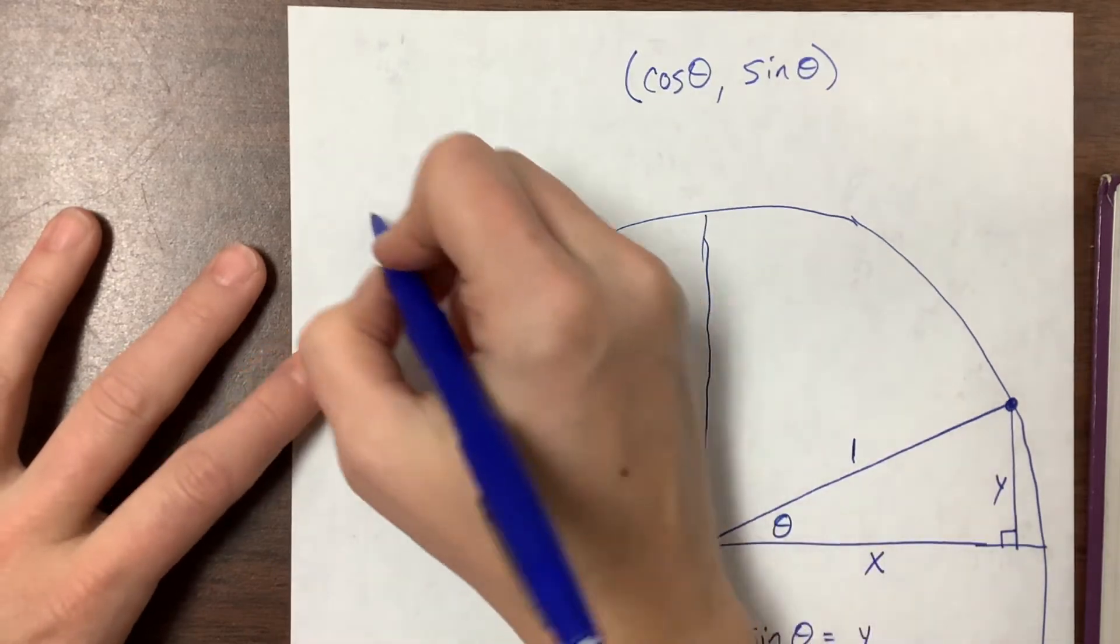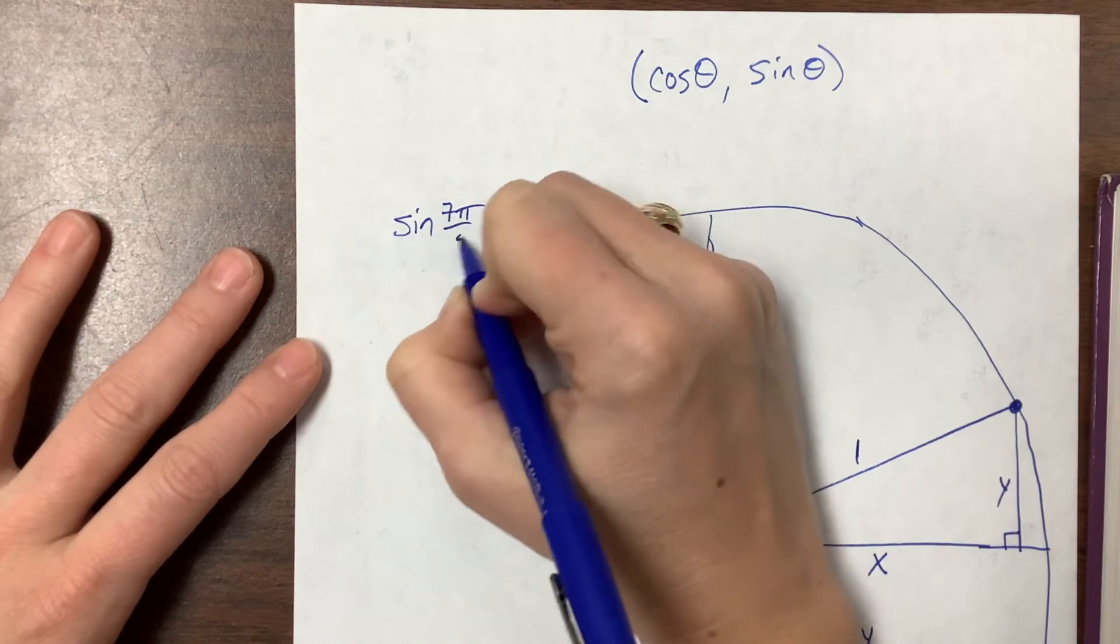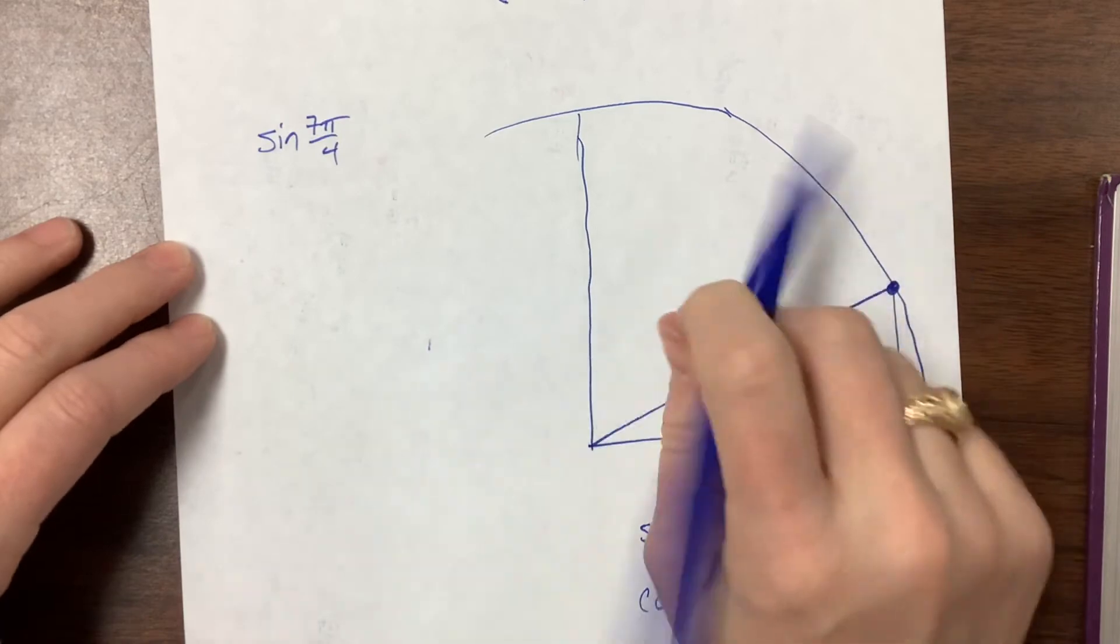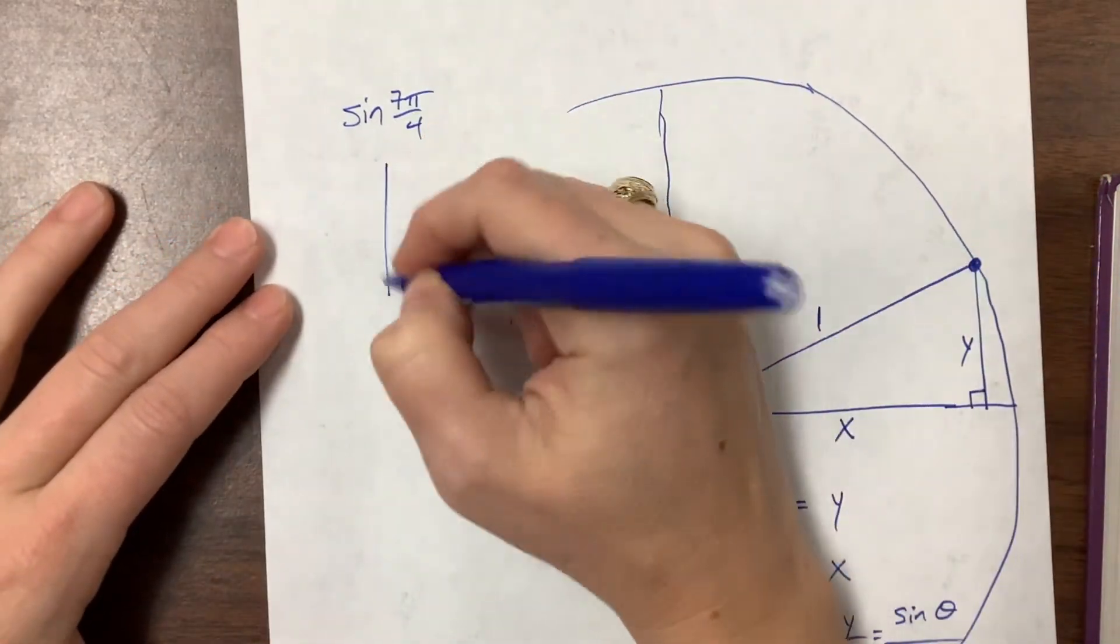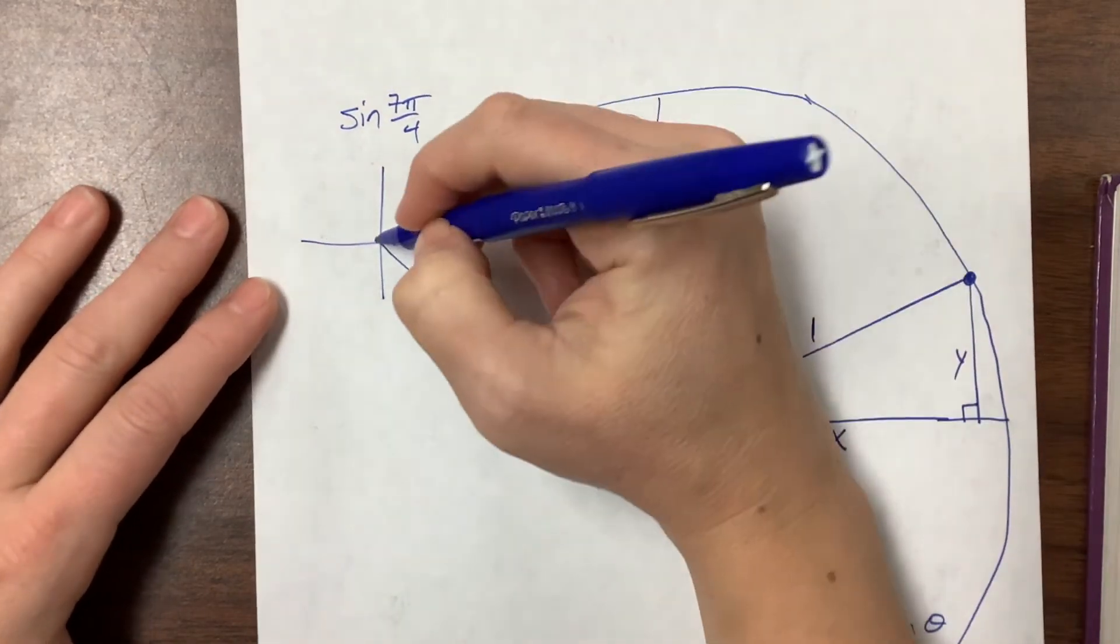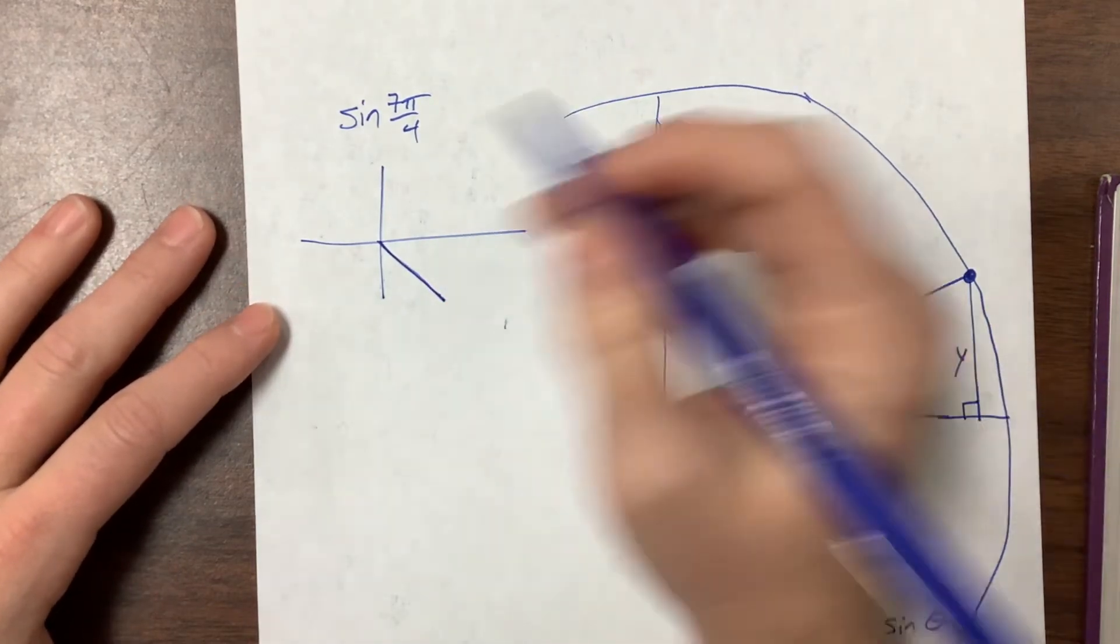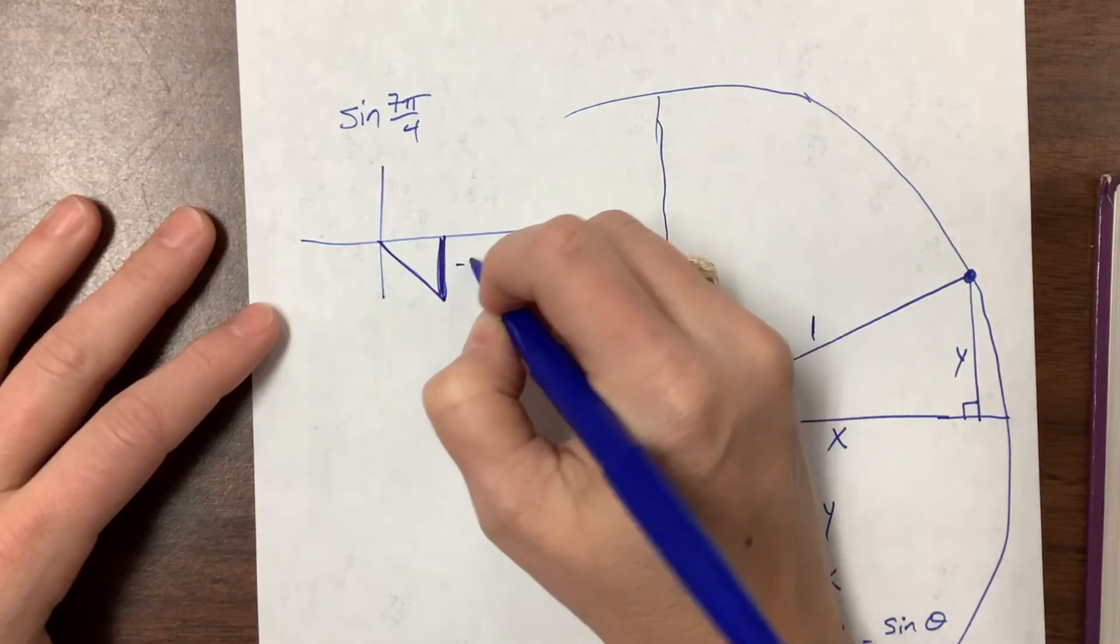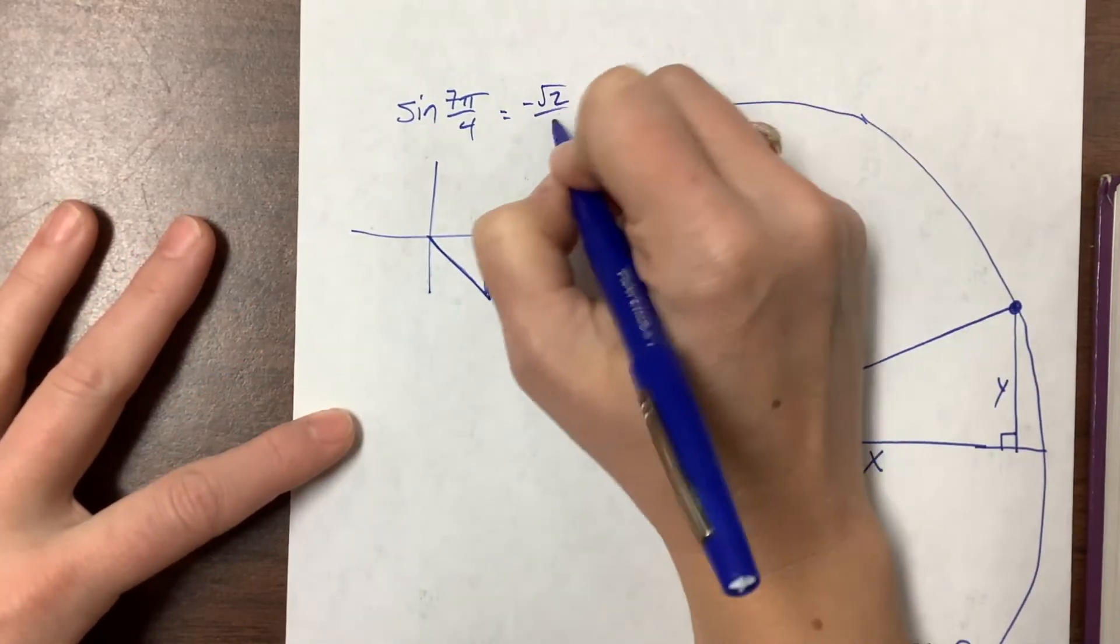Say they asked me for sine of 7π/4. I'm not even going to draw the unit circle. 7π/4 I know to be this angle down here in quadrant 4. This is in the π/4 family, so the numbers I'm looking for are root 2 over 2 and root 2 over 2. Sine is my y value, so this is the one I care about. It's gone in the negative direction, so it's -root 2 over 2. Sine of 7π/4 is -root 2 over 2.